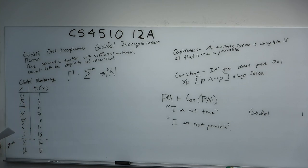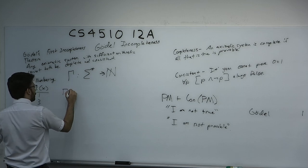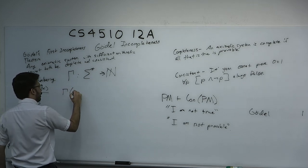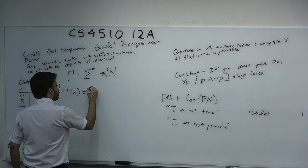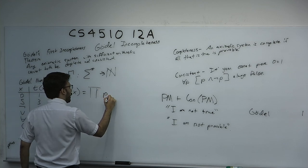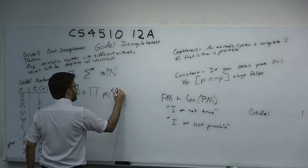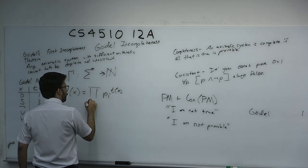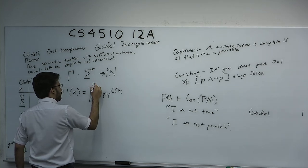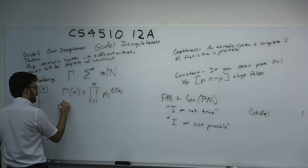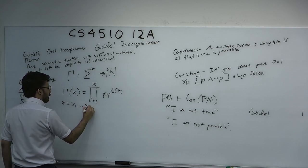He says that γ(x) is equal to the product of p_i to the t(x_i) from i equals 1 to k, for x equal to x₁ through x_k. He uses a prime encoding for the string.